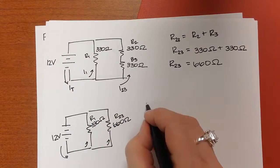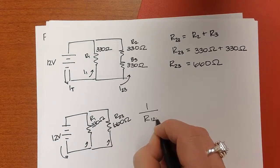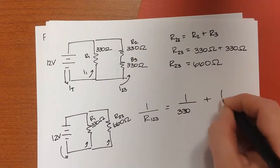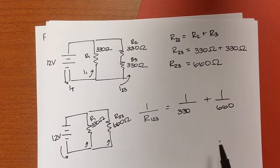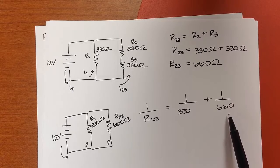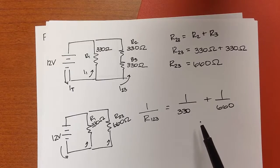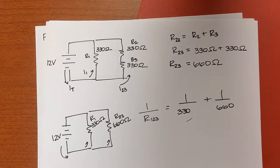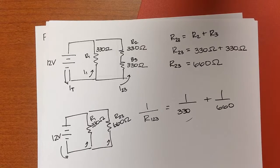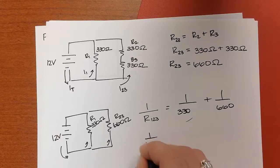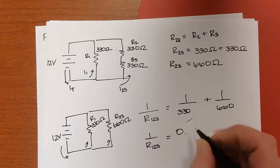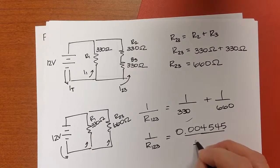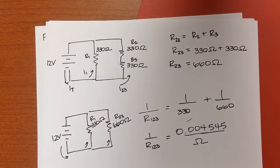So we need to combine them to get the equivalent resistance. It's going to be 1 over 330 plus 1 over 660. Okay, so which is that going to be, guys? Is it going to be smaller than 660 but bigger than 330, or smaller than 330 and 660? It's going to be smaller than 330 and 660. So when I do that on my calculator, I do 1 divided by 330 plus 1 divided by 660. And I get 1 over R123 is equal to 0.004545. That's actually what the units would look like, divided by ohms.